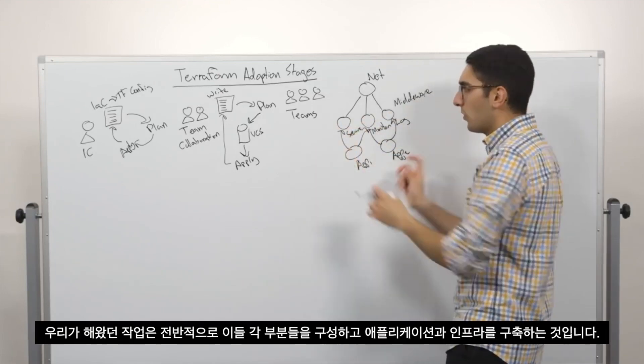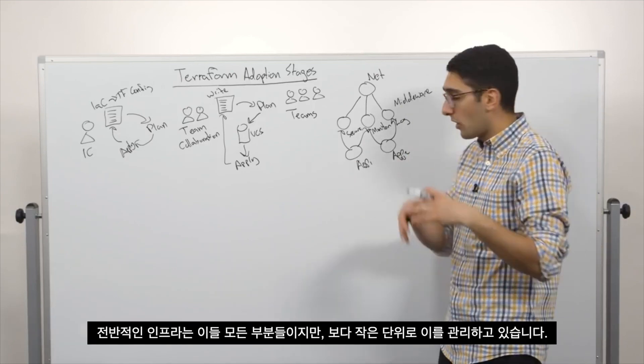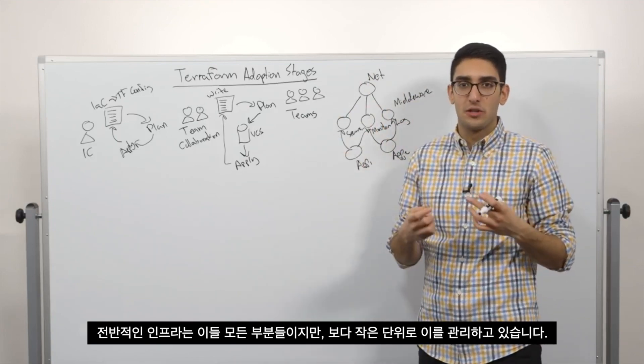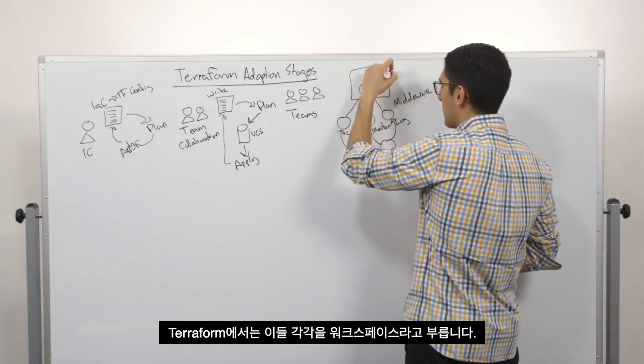So as an application, I might consume some subset of this middleware. And what we've done is on the whole, we're composing these pieces and building our application and our infrastructure. So our overall infrastructure together is all of these pieces, but we're managing it in these smaller units.